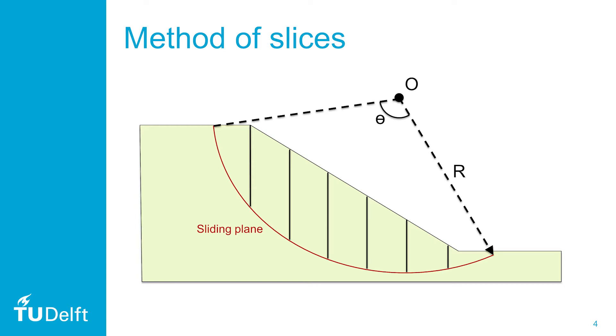The more slices we use, the more accurate the solution will be. To go in more detail and explain the different steps that should be taken, exercise 6 of tutorial sheet 8 will be explained in more detail. There are two separate methods named after the engineer who created them: Fellenius and Bishop.